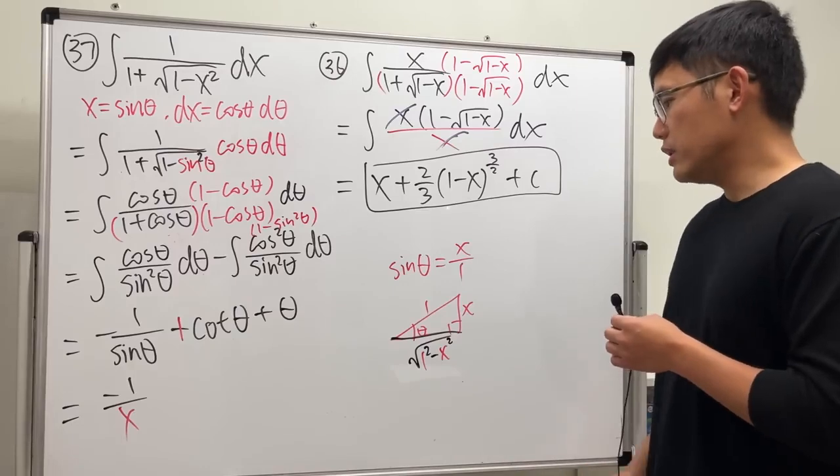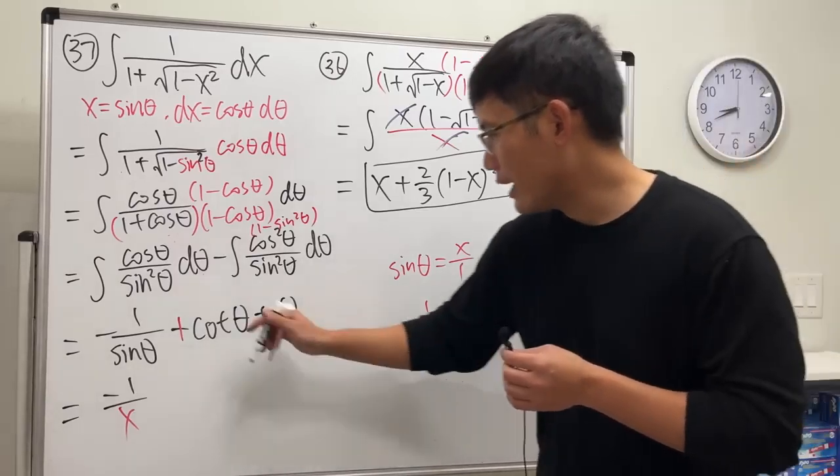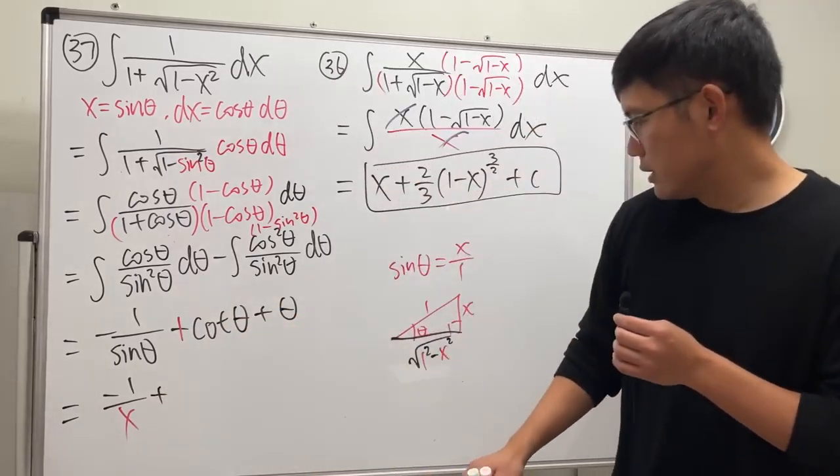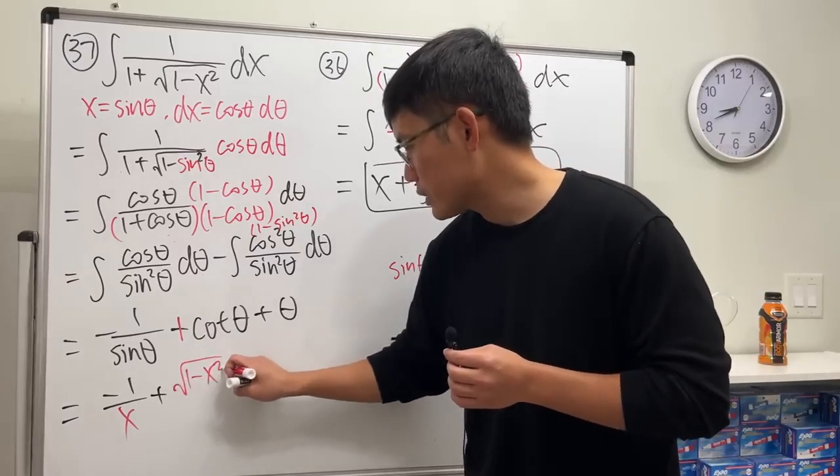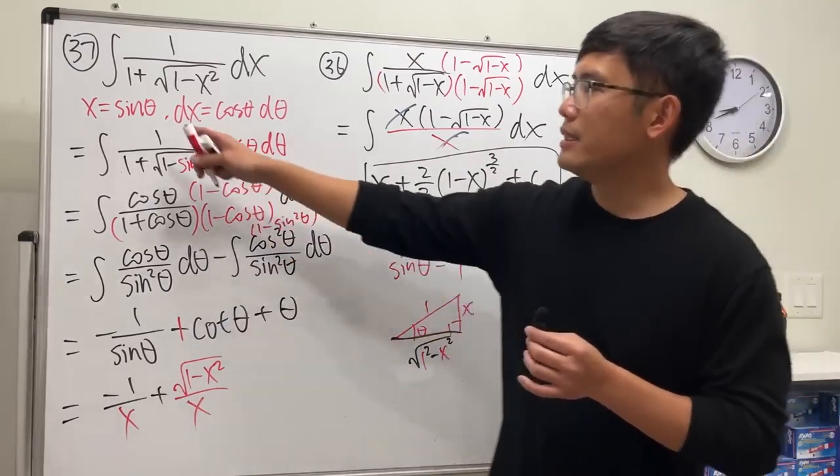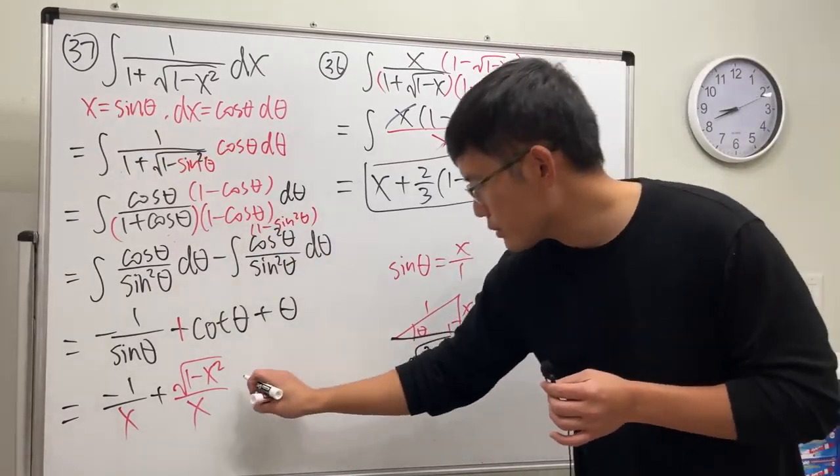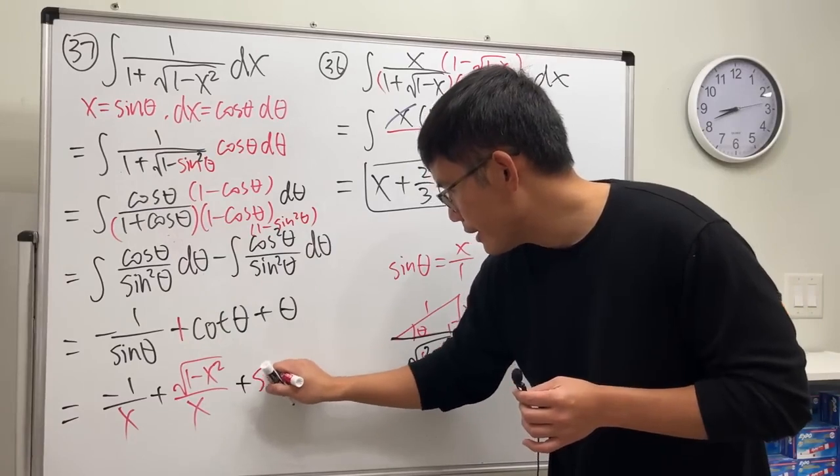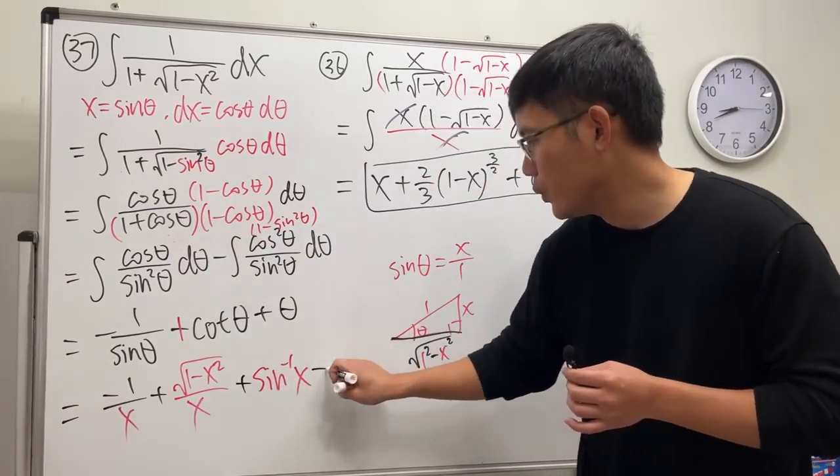So cotangent is this over that, so we have a plus square root of one minus x squared over x. And lastly, theta is just the inverse sine, so this right here plus inverse sine of x, and then we are done.